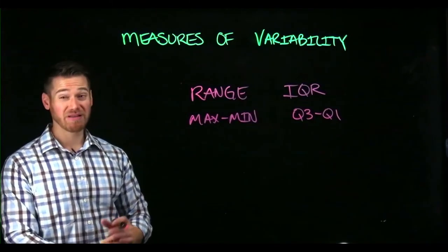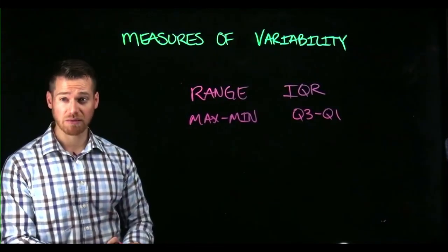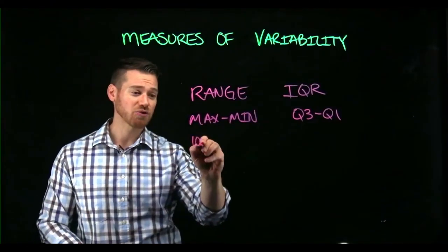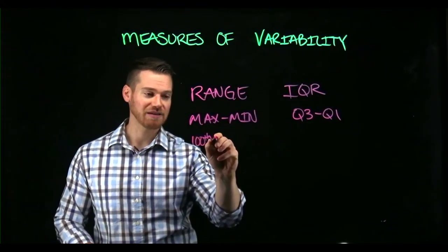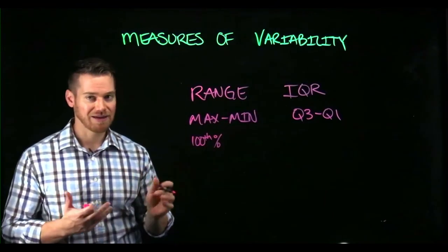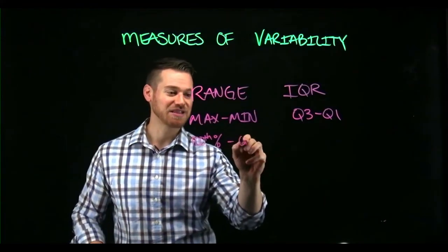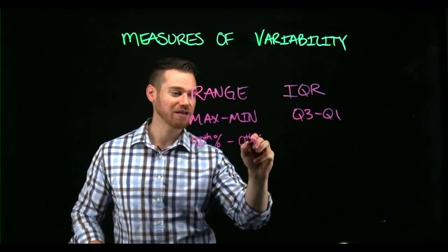If you think about this in terms of percentiles, the maximum is the score at the hundredth percentile. Technically, it's the 99th minus the zeroth percentile at the bottom, so max minus min.